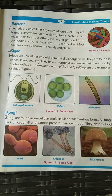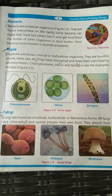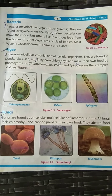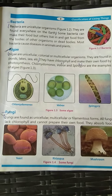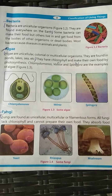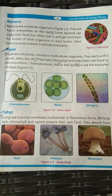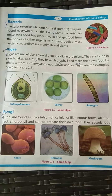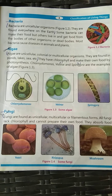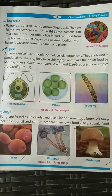Yeasts, rhizopus, and mushrooms — these are three examples of fungi. Fungi are found as unicellular, multicellular, or filamentous in form. All fungi lack chlorophyll and cannot prepare their own food. Here you can see the fungi and remember these three examples.